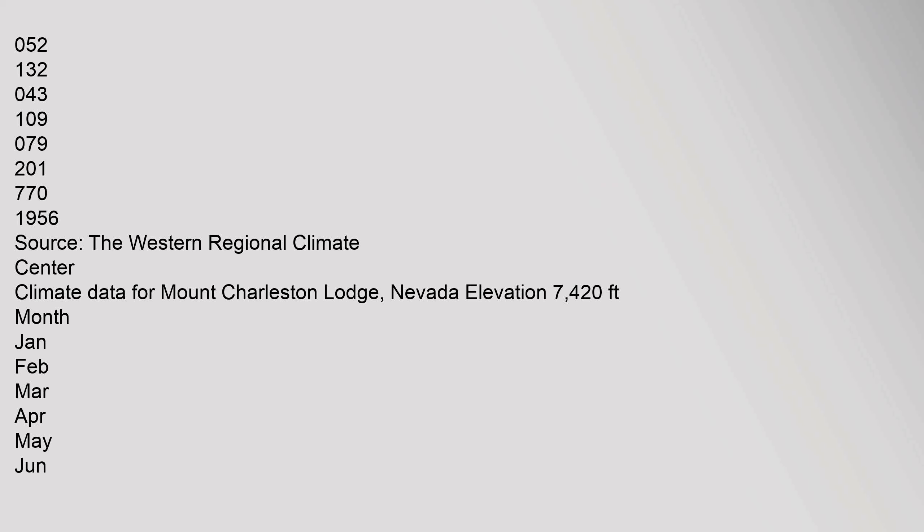Climate Data for Mount Charleston Lodge, Nevada, elevation 7,420 feet, covering months January through December.